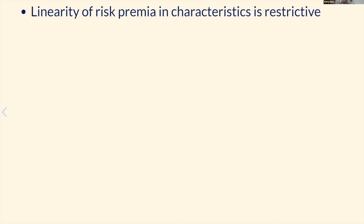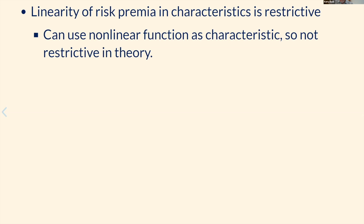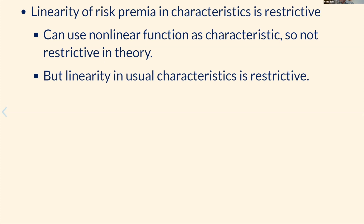They also apply this to PPCA. I have a couple of small comments. First, linearity of risk premia in characteristics is a restrictive condition in practice — random forests and neural networks with non-linear functions and interactions do better at predicting returns both in and out of sample than linear models. However, one could expand X to include non-linear transformations and still be technically within the linear framework.